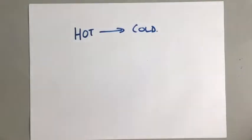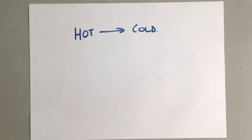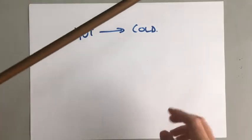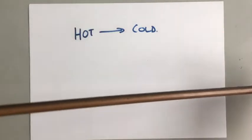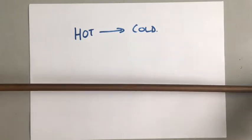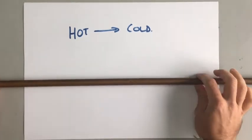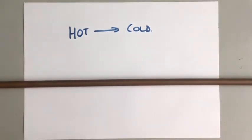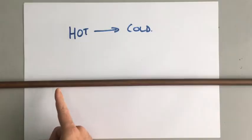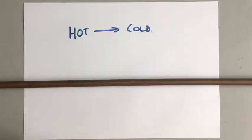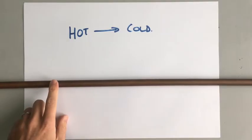Heat transfer happens in three different ways depending on whether you're talking about solids, liquids, gases, or none of those things. Here we have a metal bar made of copper. If I get a lighter and heat up this end of the bar, then this end of the bar will get hot.